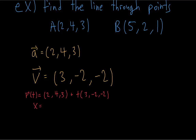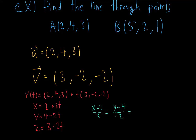Our parametric equations are just three separate equations for X, Y, and Z. And for our symmetric equations, we just solve for T in each of those equations. So we have the vector equation, the parametric equations, and the symmetric equations of our line.